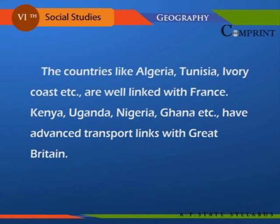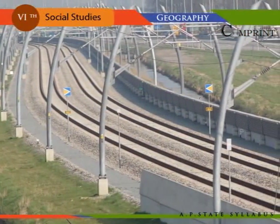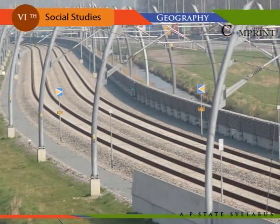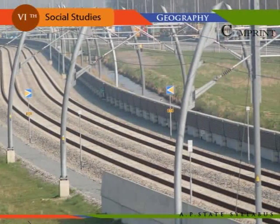Countries like Algeria, Tunisia, and Ivory Coast are well linked with France. Kenya, Uganda, Nigeria, and Ghana have advanced transport links with Great Britain. The railway lines laid by Europeans in the past for exporting raw materials remain the important railways at present.